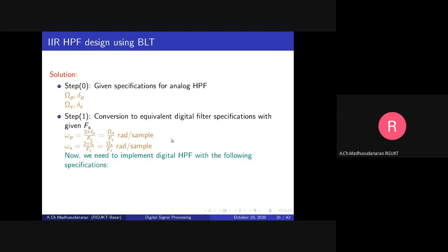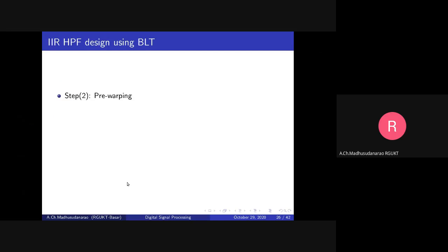Now we need to implement a digital high pass filter with the following specifications: omega_p, delta_p, omega_s, delta_s. As we are trying to implement this with the help of bilinear transformation, we need to go for pre-warping, because bilinear transformation will introduce a warping effect on the frequency axis. So we need to do pre-warping to avoid that warping effect.